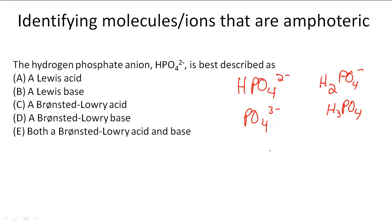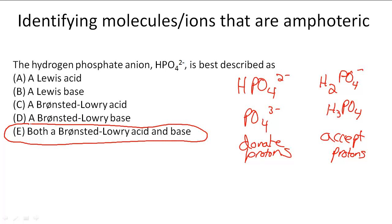So it can either donate protons or accept protons. Based on the Bronsted-Lowry definition, we know that encompasses both behaviors. Because HPO4^2- can act both ways, it's amphoteric, and E is the answer.